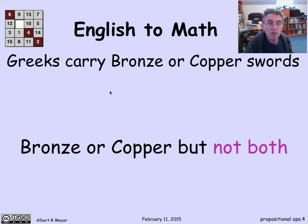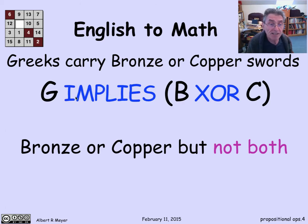So this time we mean that Greeks carry exactly one of a bronze or a copper sword. You'd carry a copper sword if you didn't have access to a bronze one. And so now we translate that into Greek implies B for bronze or C for copper. But this time we use the XOR. XOR means that one of them is true exactly, but not both and not neither.